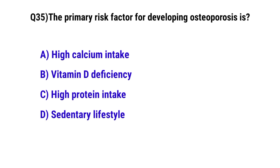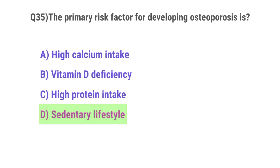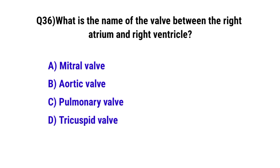Question No. 34: Bradycardia refers to a heart rate that is — the correct option is A: slower than normal. Question No. 35: The primary risk factor for developing osteoporosis is — the correct option is D: sedentary lifestyle.